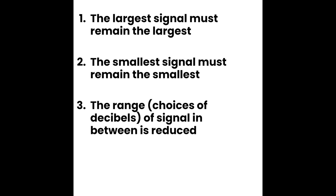The third rule is that the range, or the choices of decibels being displayed, of the signal in between is reduced. The idea behind this is that we are reducing the vast amount of choices into a smaller group. We'll go over some examples later in the unit.